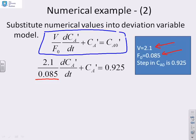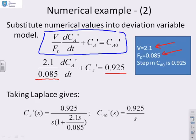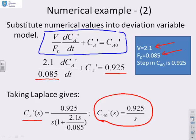Plugging in the numbers — V = 2.1, F0 = 0.085, and a step in CA0' of magnitude 0.925 — we get: (2.1/0.085) dCA'/dt + CA' = 0.925. Taking Laplace transforms, and noting that the step input CA0'(s) = 0.925/s, after rearranging to solve for CA'(s), we get: CA'(s) = 0.925 / [s · (1 + 2.1s/0.085)].